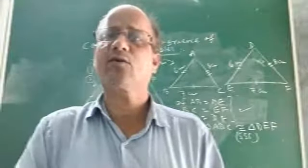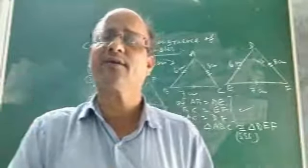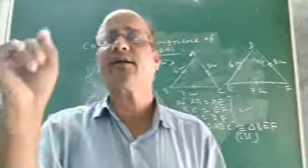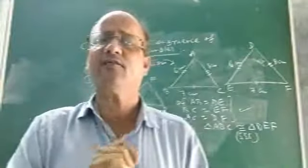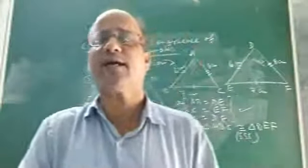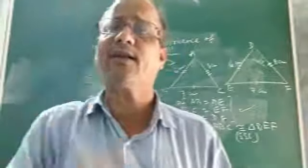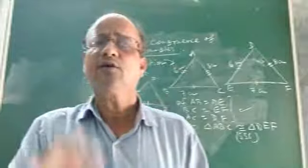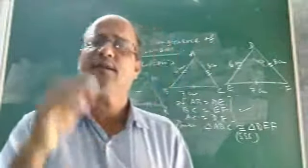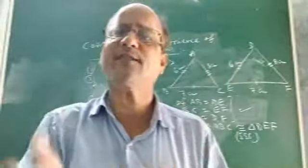Another is side-angle-side congruence condition, then RHS — right angle, hypotenuse and side — congruence condition. There is another one known as angle-angle-side, AAS, but it is not in the course of class 7; it will be taught in class 9. So today let us discuss these four criteria: SSS, SAS, ASA, and RHS.